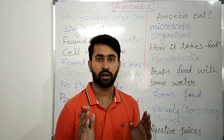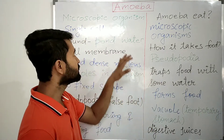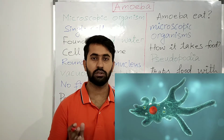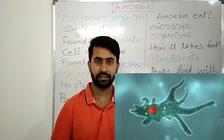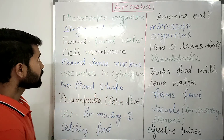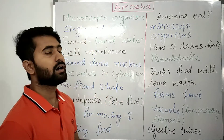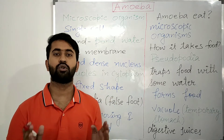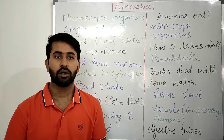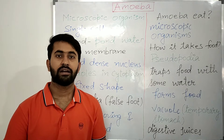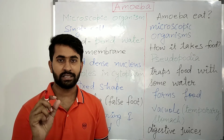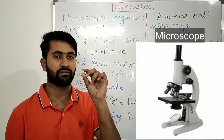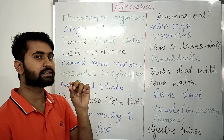An example of such an organism is amoeba. It does not have a mouth and a digestive system. Amoeba is a microscopic organism. Microscopic organisms are those which can be seen only with a microscope — they are very, very small in size.